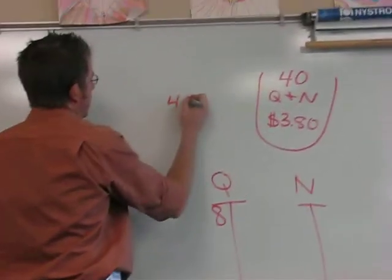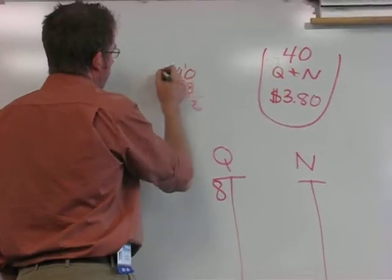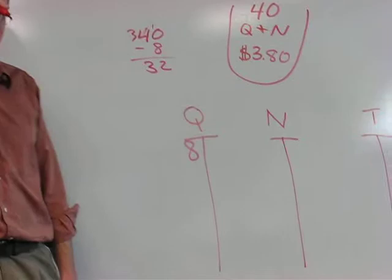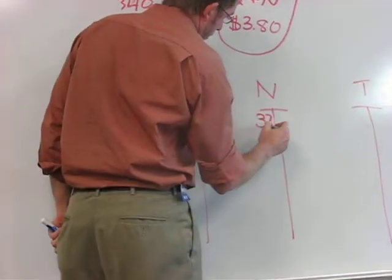Now, how many nickels are left if I had eight quarters and I need 40? Well, I'm going to do 40 minus 8. 10 minus 8 is 2, 3, 32. That's the last time I'm going to do that math, because the rest of them I'm going to do in my head is 32. So I'm going to have 32 nickels.